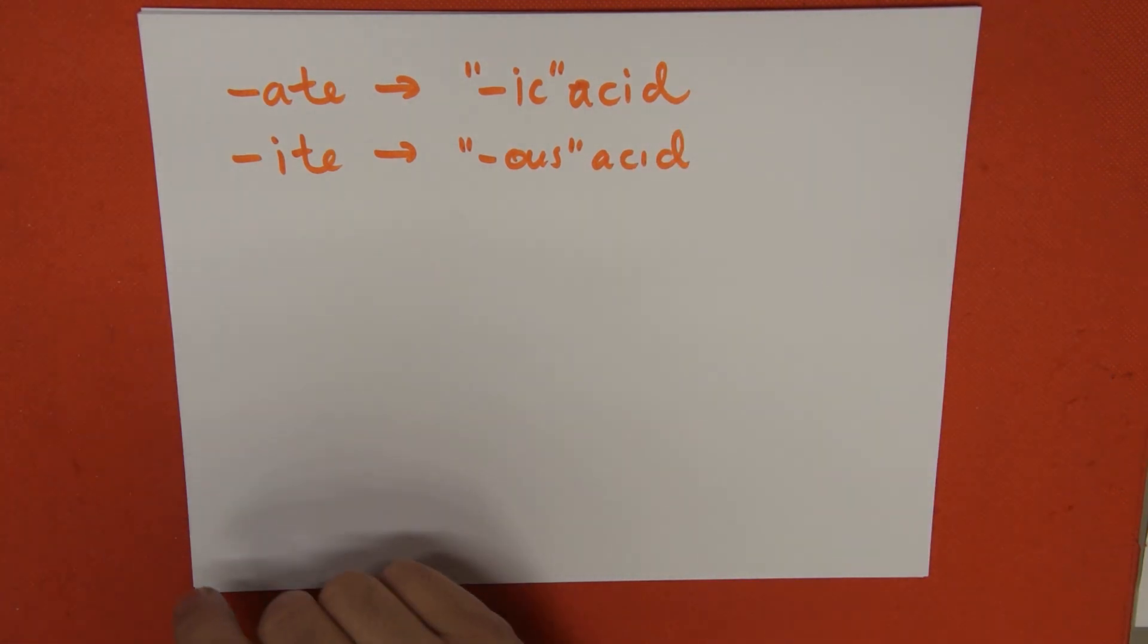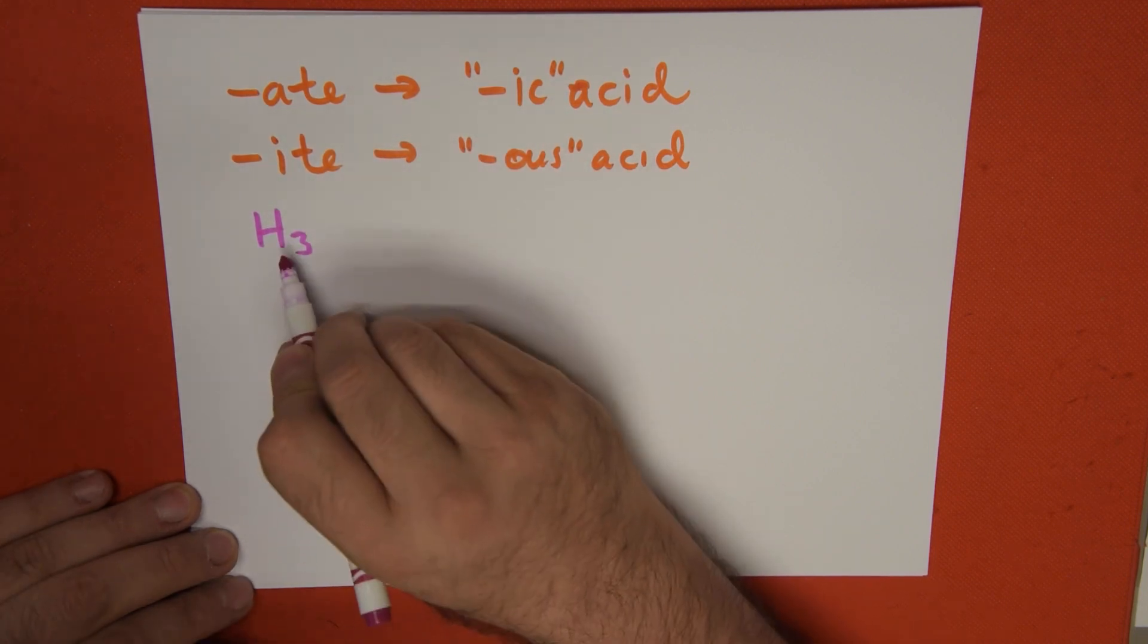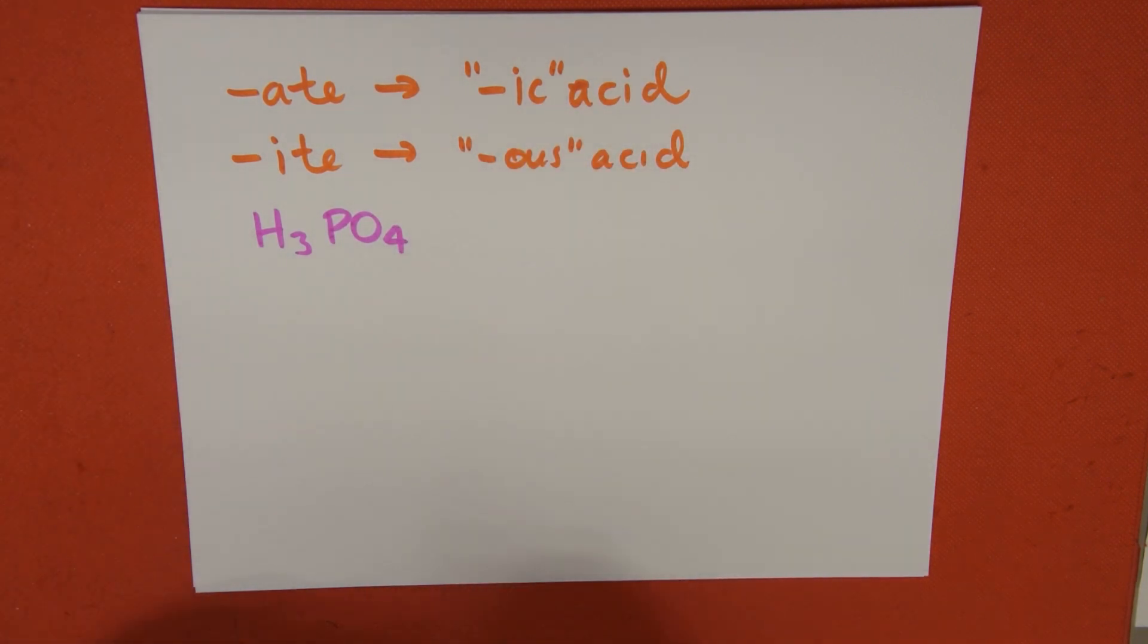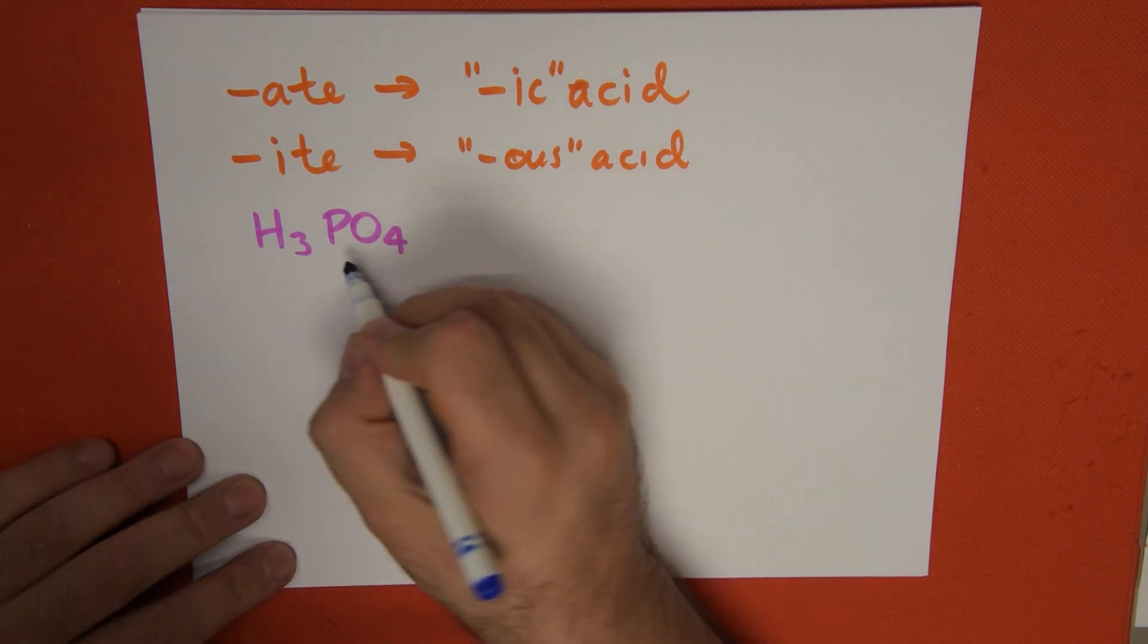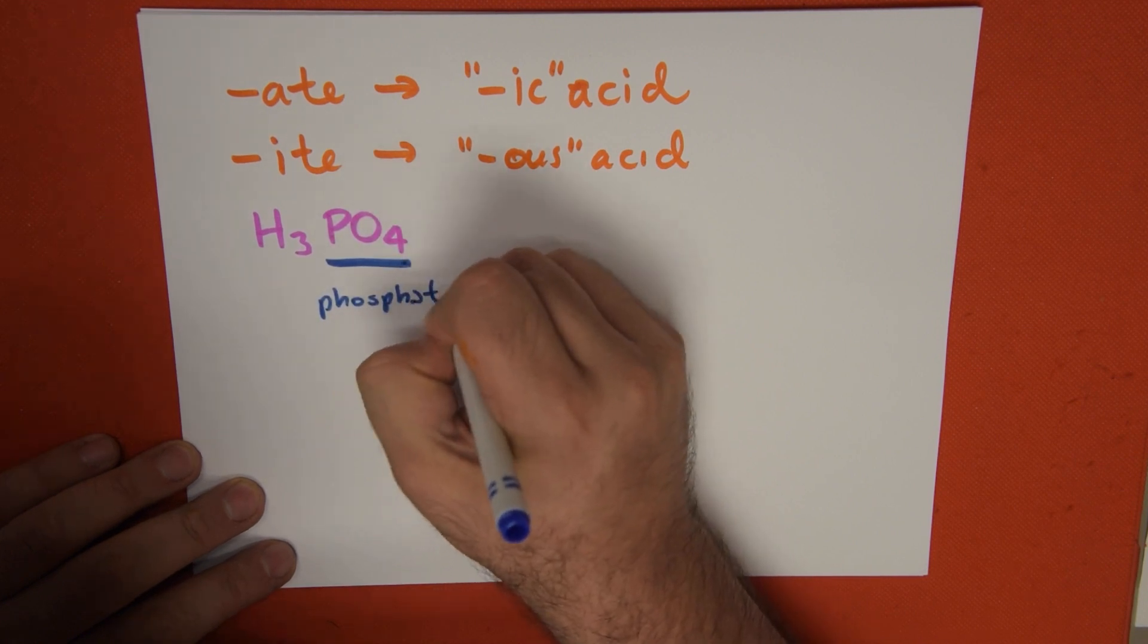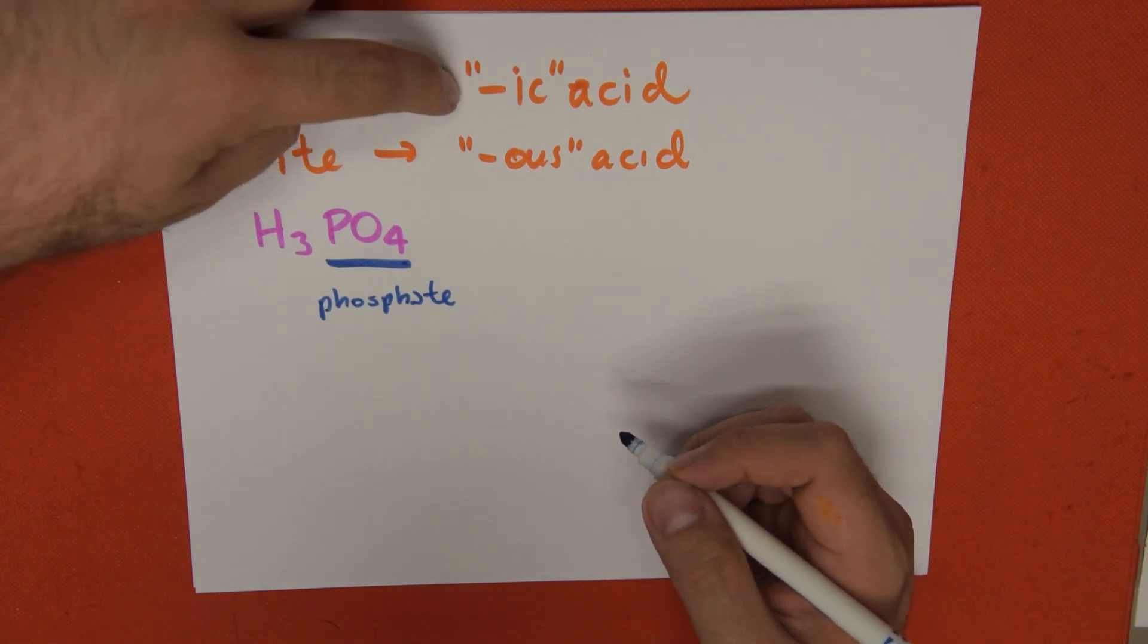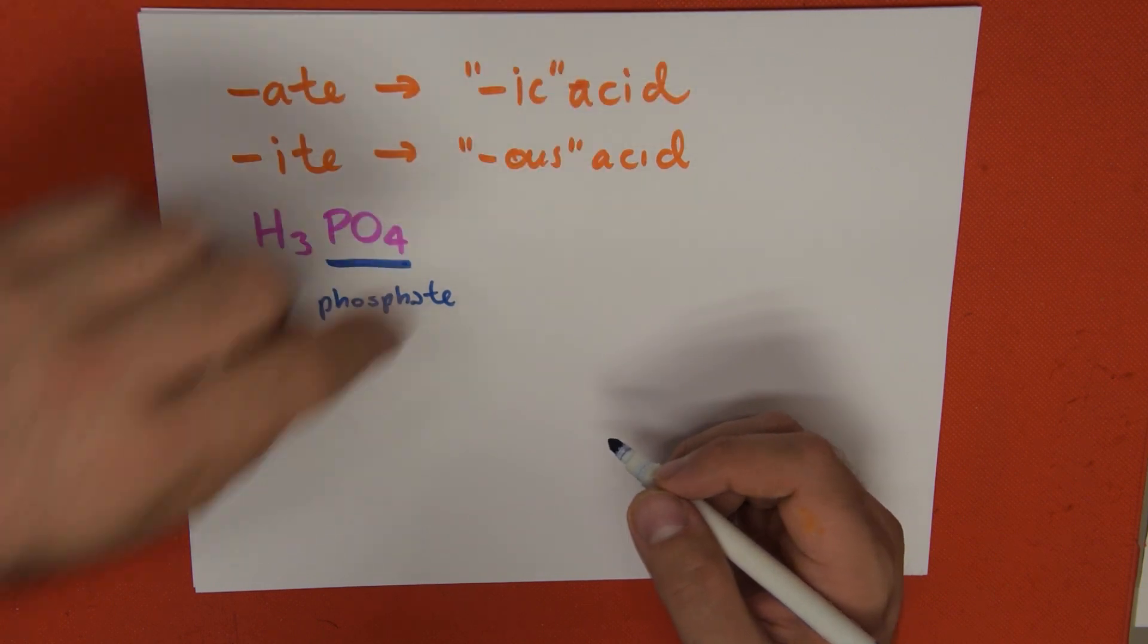Let's try a quick example. When we have hydrogen as a cation and an oxyanion as the anion, we have an oxyacid. The first thing we need to identify is what is the original name of this oxyanion. We go to our chart or table, and we see that it's phosphate. According to our formula, if it ends in -ate, we're going to turn it into -ic and add the word acid.